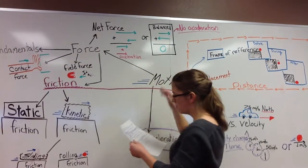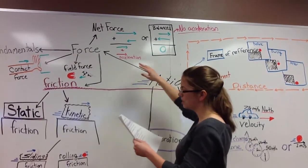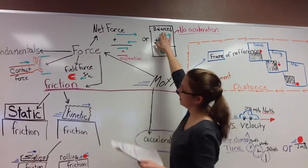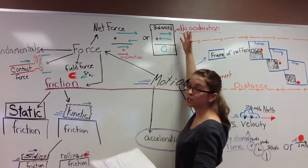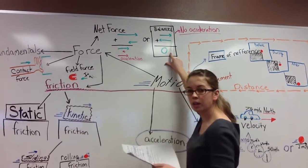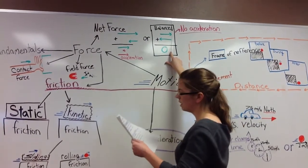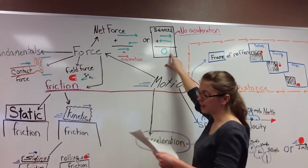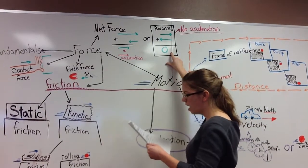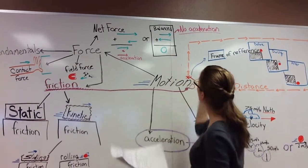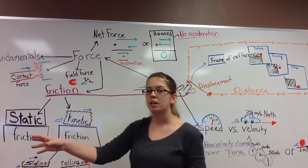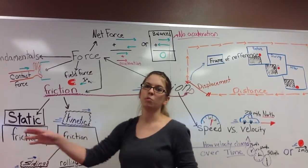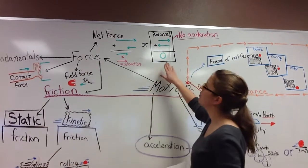The other option for net force is that net force can be balanced. If net force is balanced, the two forces or all the forces combined equal zero. If all the forces combined equal zero, there is no acceleration. An object won't start moving. An object will keep moving the same speed. It won't slow down. It won't speed up. That would be a net force of zero.